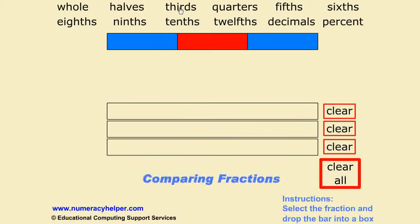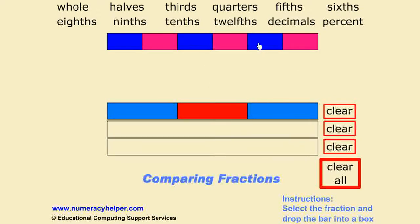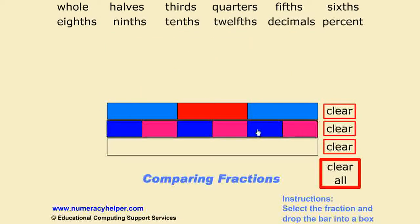For example, we can click on the thirds at the top and drag it down to the first bar, and then we can take sixths by clicking on the number, dragging that down below it, and from here students can compare the fractions. For example, in this case, we've got one third equaling two sixths.